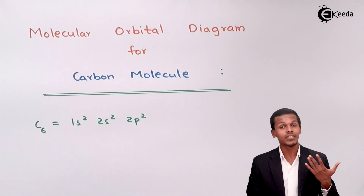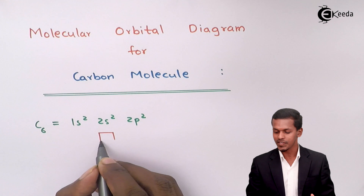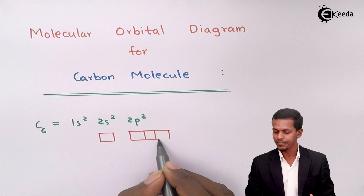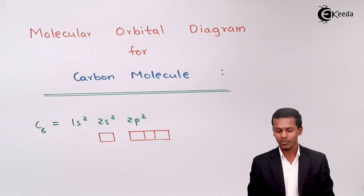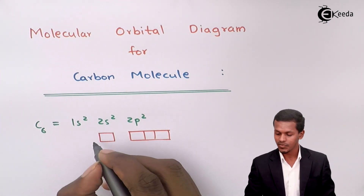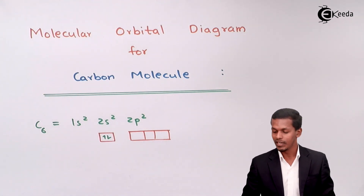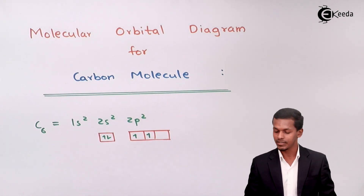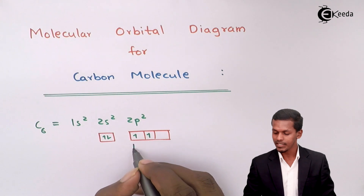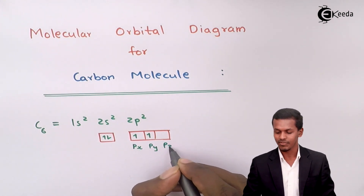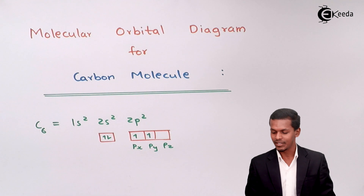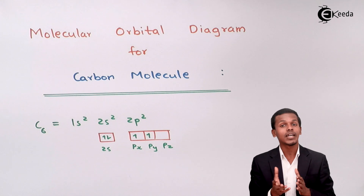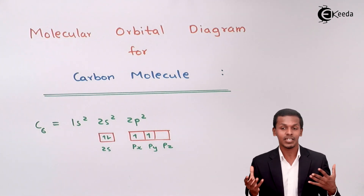We can also represent the orbitals for this. The s subshell consists of only one orbital, while the p subshell consists of three orbitals. Filling the electrons: two electrons are present in the 1s orbital and two electrons are present in the 2p subshell — one in 2px and one in 2py — while 2pz has no electron. This is the 2s orbital.